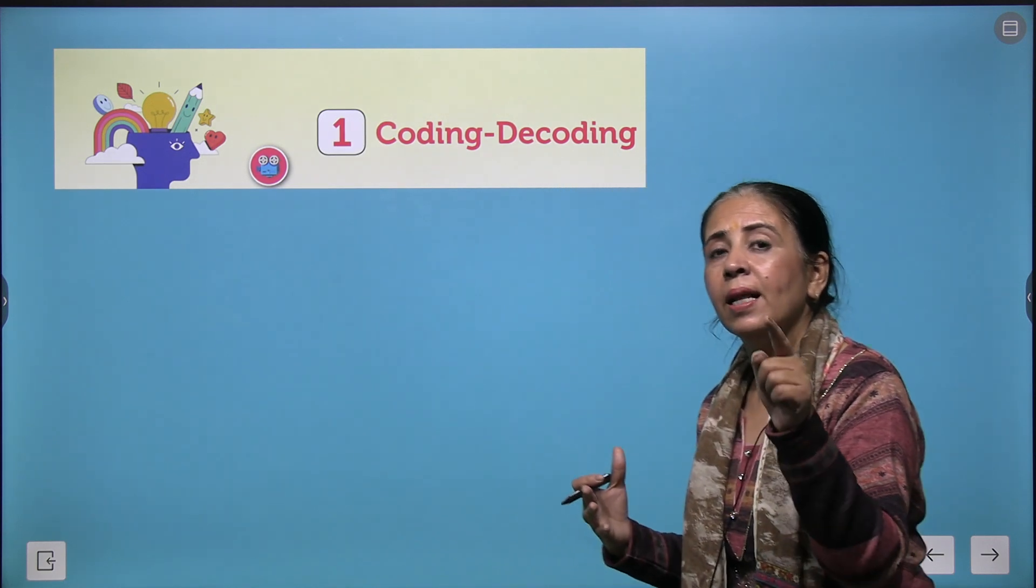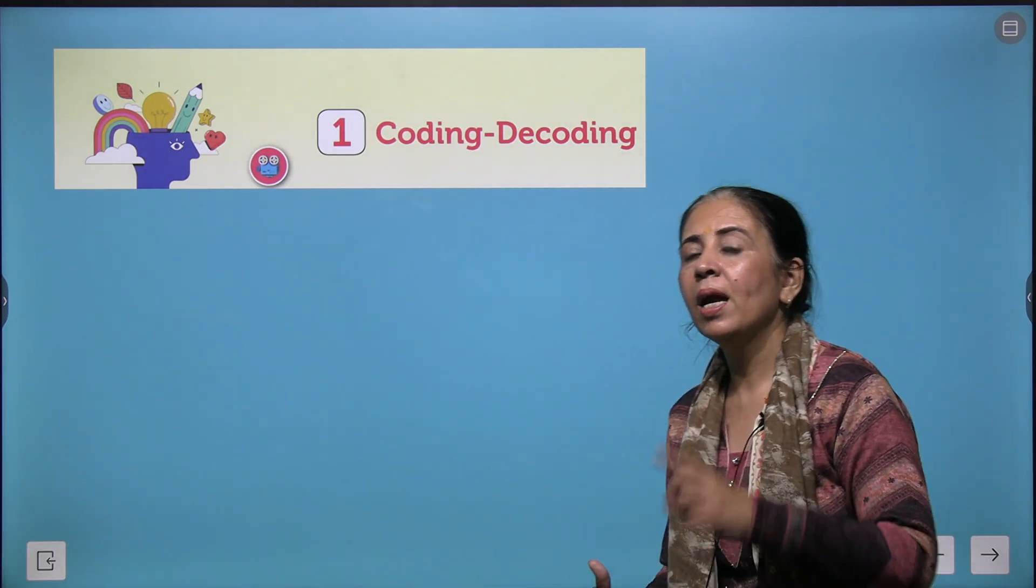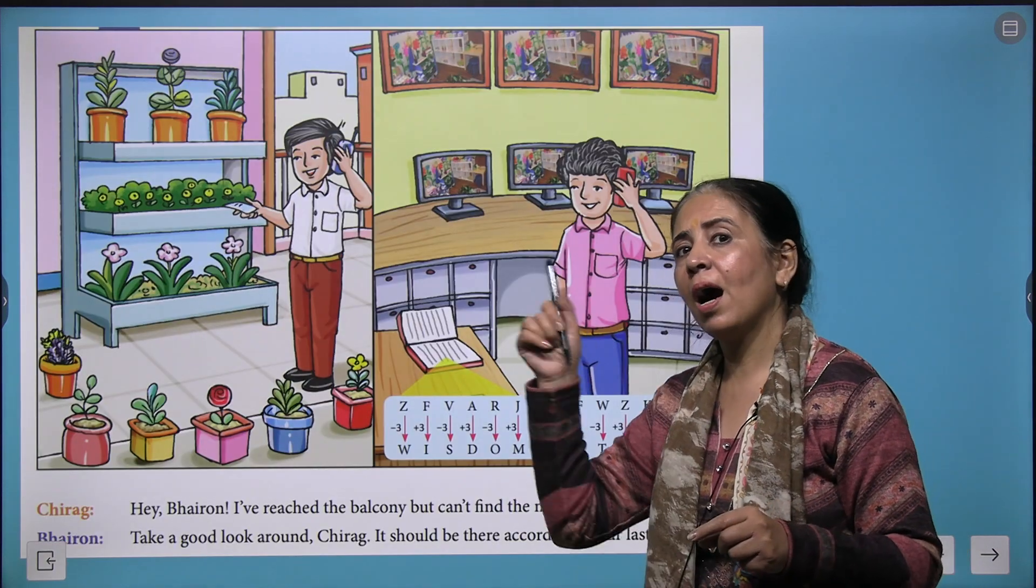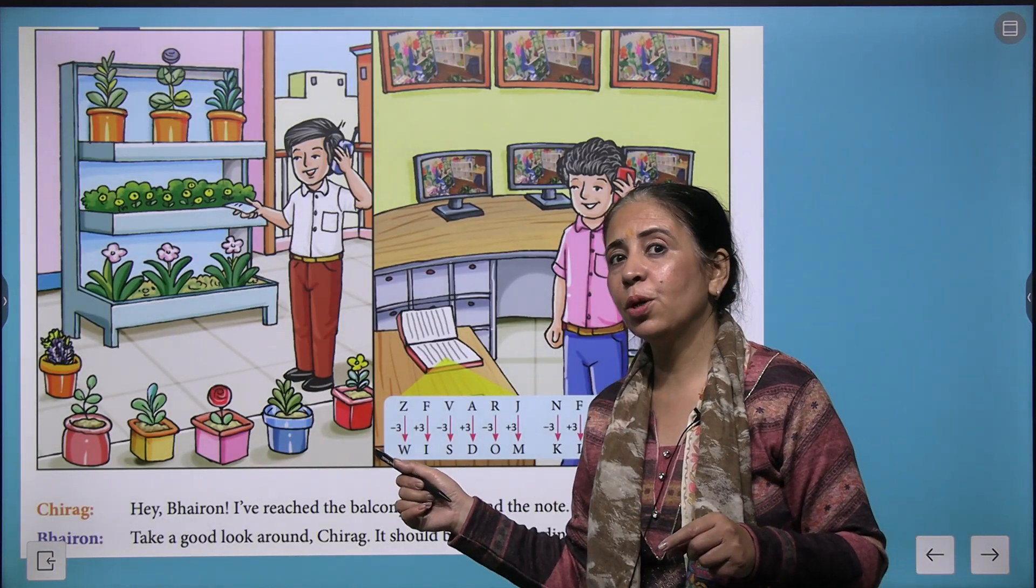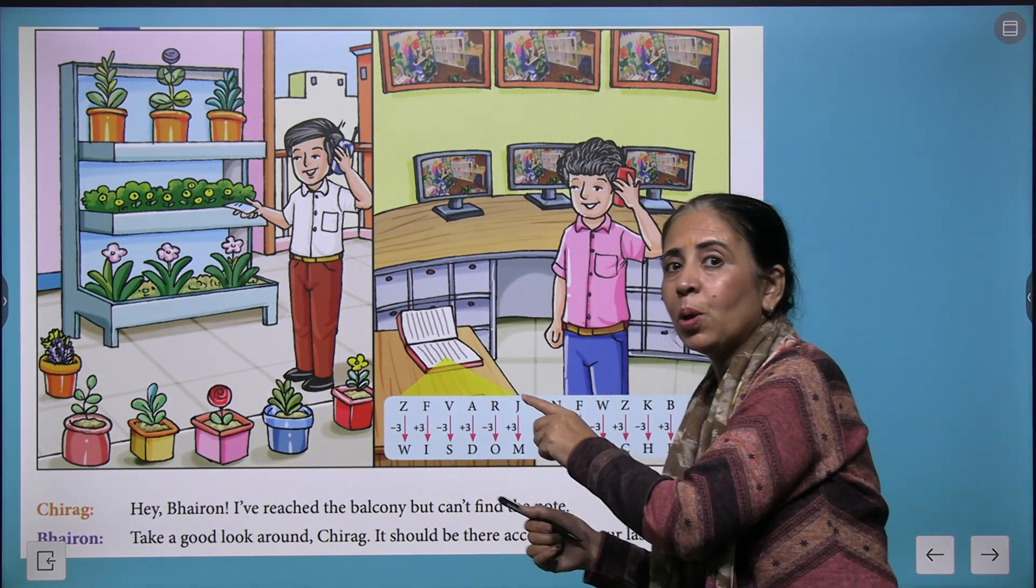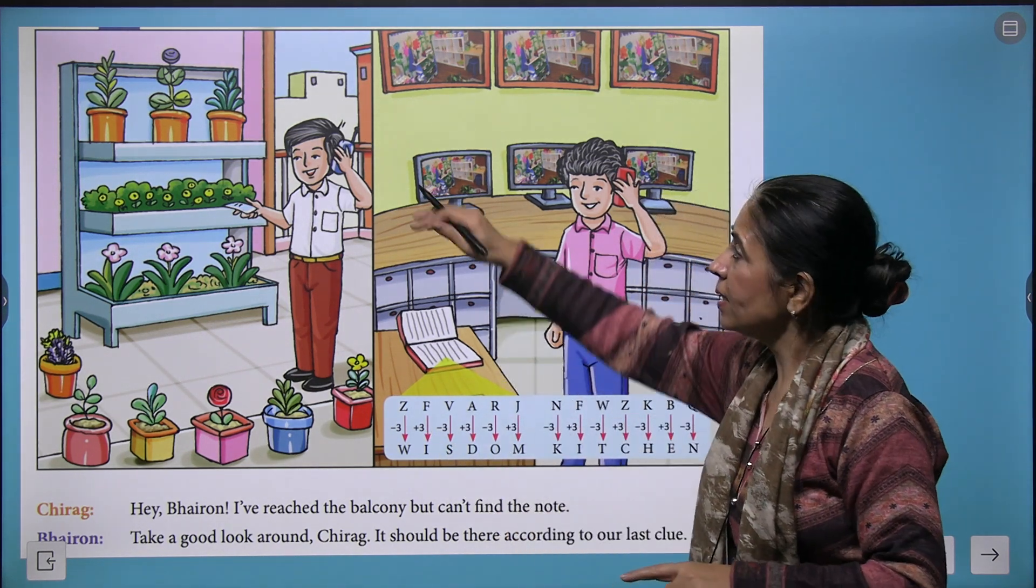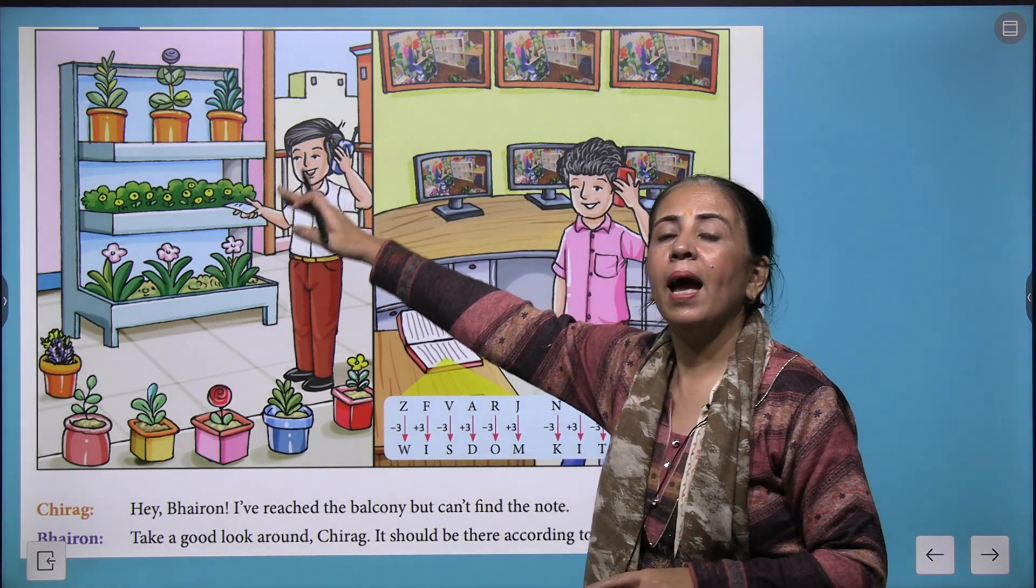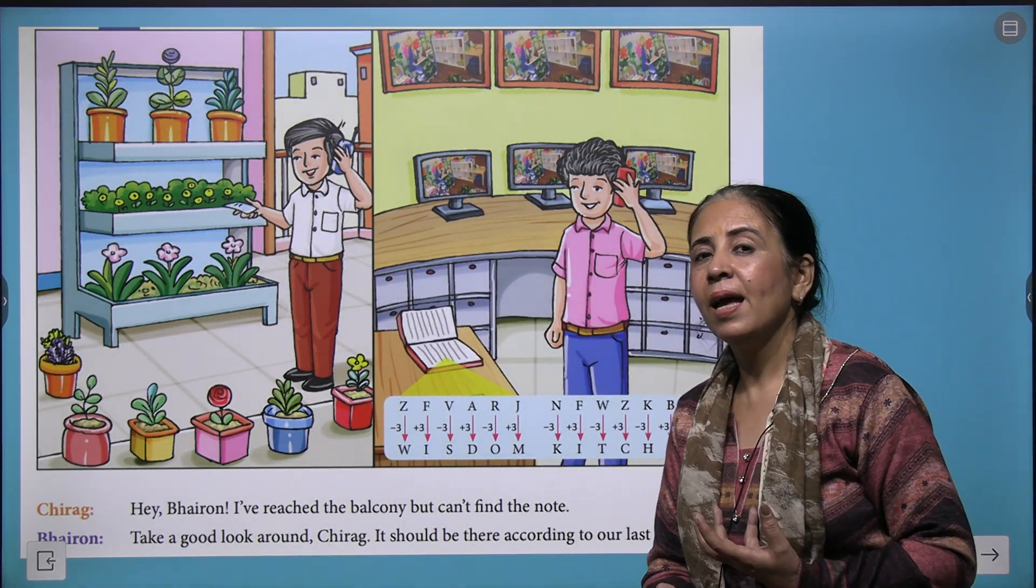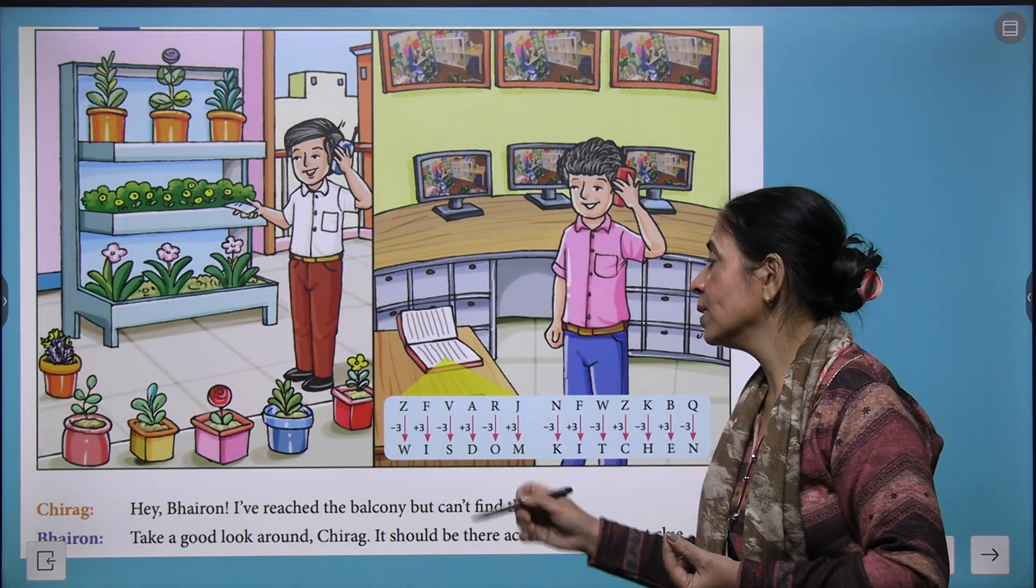It has been analyzed that if you do questions of coding-decoding, it improves your memory as well. Here, Bekon and Chirag are playing the game of coding and decoding. In the previous message, Bekon got the indication that he has to find the next code in the balcony. He is standing in the balcony, looking for the code, and immediately he got it.